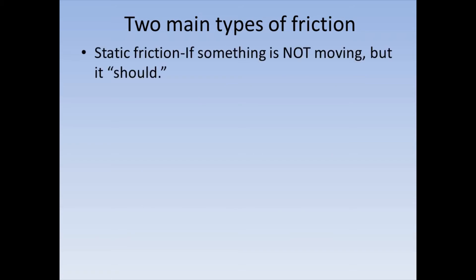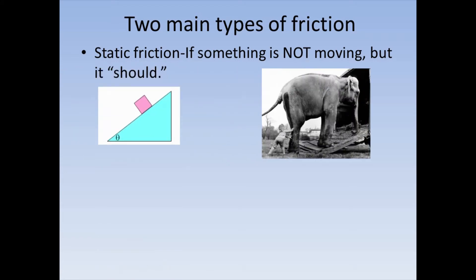The first type of friction is called static friction. That's if something is not moving, but it quote-unquote should be. If we have a ramp where there's a block sitting on it, if it were frictionless that block would slide down that ramp. But since there is friction, the block isn't moving. Same with trying to push an elephant or any other large object, like refrigerators. Things that are just not able to budge and they're stuck. That is called static friction.